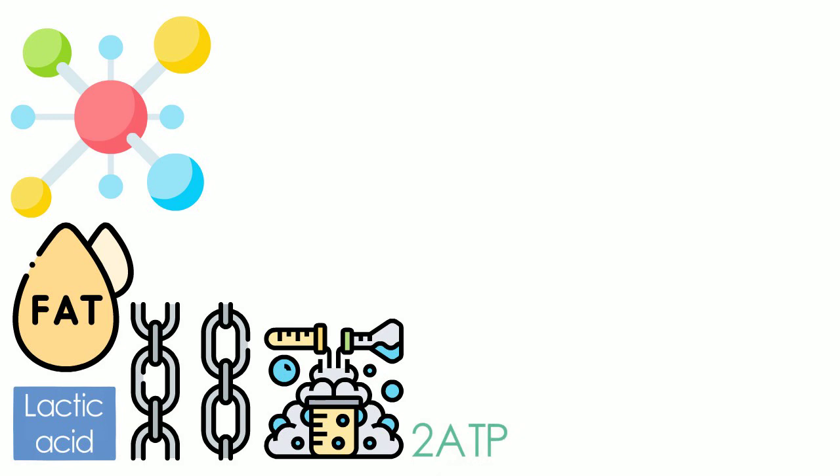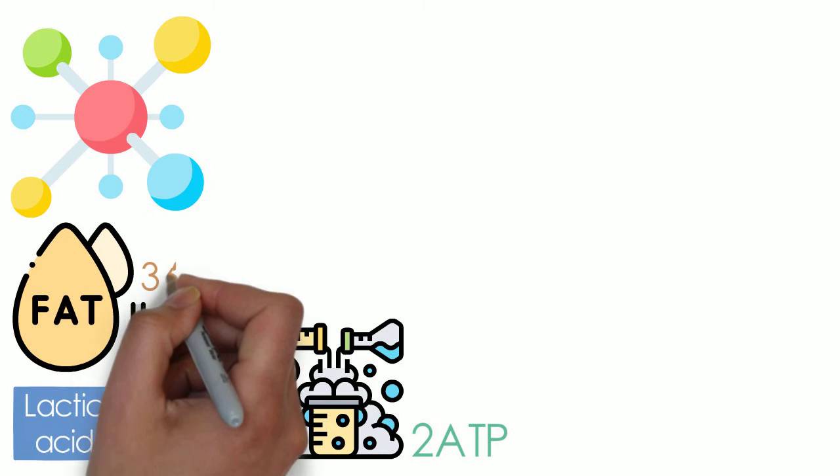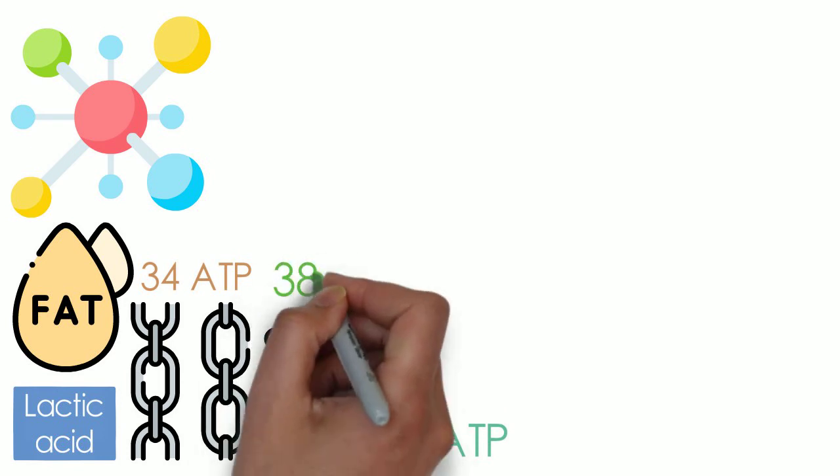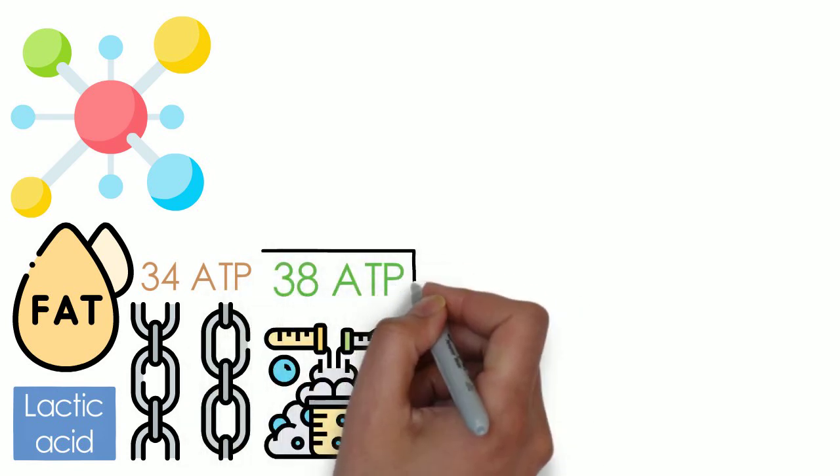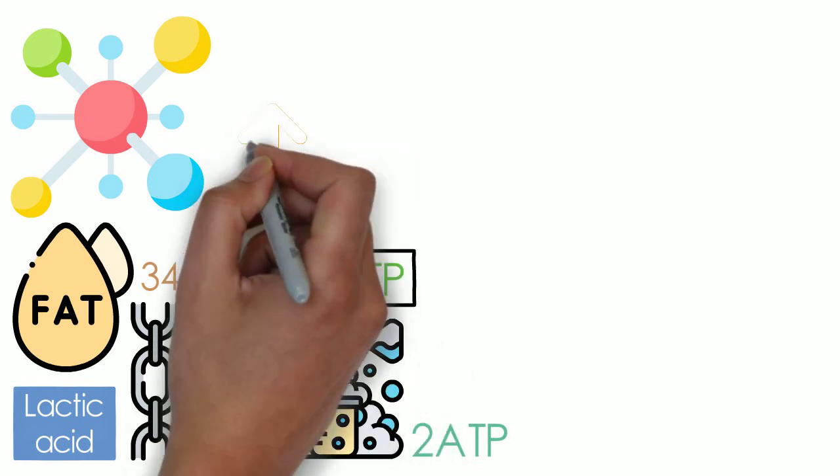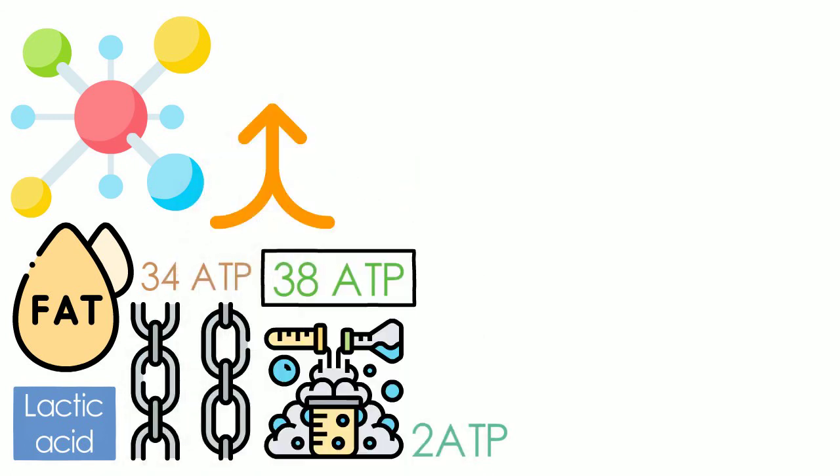In the electron transport chain reactions, a total of 34 ATP is produced. The entire aerobic process yields 38 ATP that would be a source of energy for the muscles. In comparison, the aerobic energy system produces more energy than the other two systems combined.